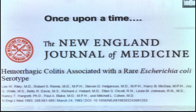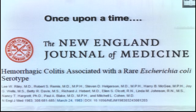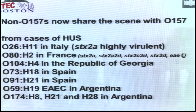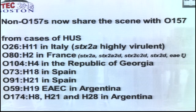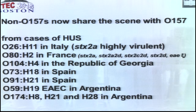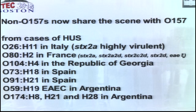Once upon a time, 30 years ago, hemorrhagic colitis was associated with a rare Escherichia coli serotype called O157. Recently, at the 9th International Symposium of VTEC in 2015 in Boston, non-O157s share the scene with O157. We had reports of different serotypes from cases of HUS: O26H11 is now the primary cause of HUS in Italy, O80H2 in France, O104H4 continues to be found around the globe including the Republic of Georgia, and in Spain we've seen very exotic serotypes including O59H19, which is an enteroaggregative E. coli found in Argentina.